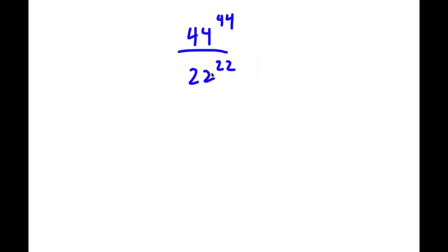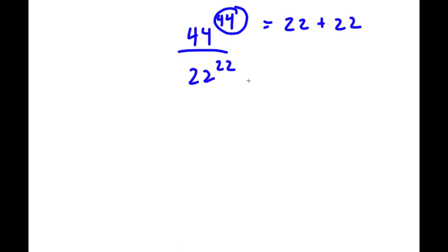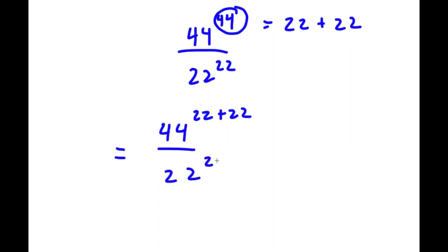In this problem, I have 44 to the power of 44 over 22 to the power of 22. To start, 44 is the same thing as 22 plus 22. So now this is equal to 44 to the power of 22 plus 22 over 22 to the power of 22.